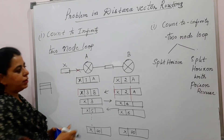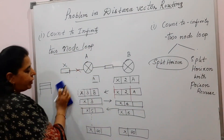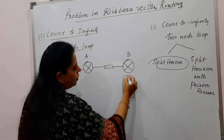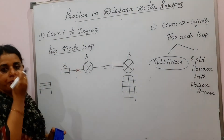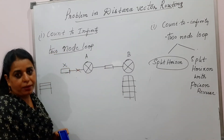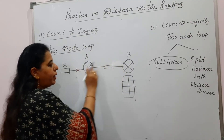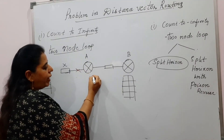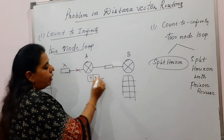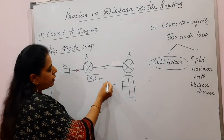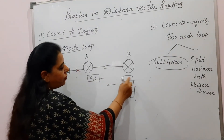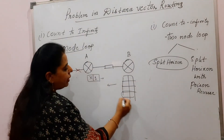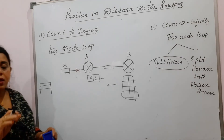What is the solution for the count to infinity problem? Go for split horizon. What is split horizon? Split horizon means that B, while sending its distance vector, should always skip that information which has originally come from A. That means, if the source of information for B is A, it should not send that information back to A again. Because A already conveyed that information — so the information received from A should be deleted from the distance vector before sending it back to A. That is why we call this solution split horizon.